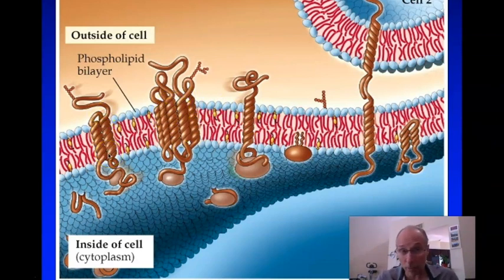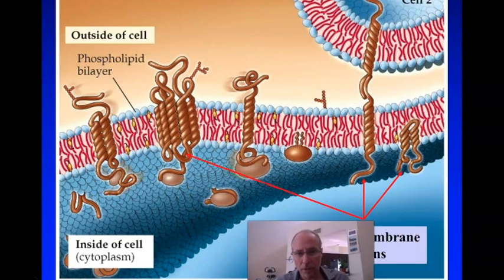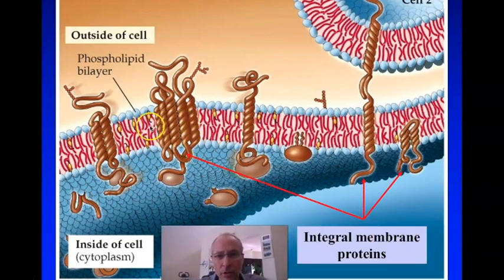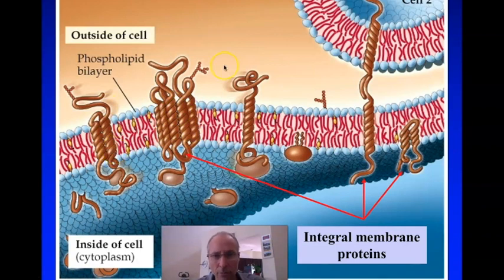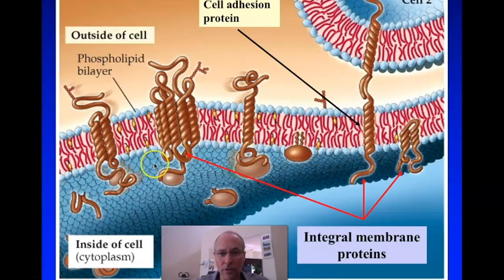They're integrated into the membrane, so they're referred to as integral membrane proteins. Every single one of these is an integral membrane protein. Some proteins go completely through the membrane — this one here depicts what we call an ion channel. These are both receptors. This is a cell adhesion molecule. All of these molecules are embedded in the membrane, going all the way through, with a part that sticks off to the inside.